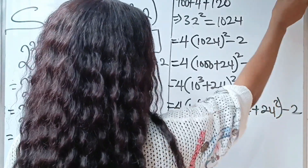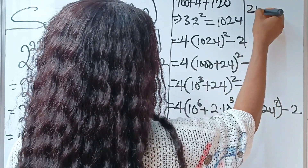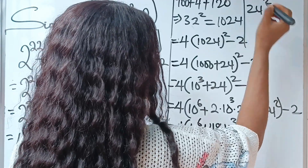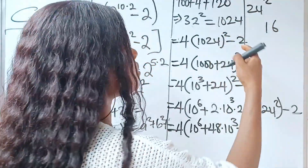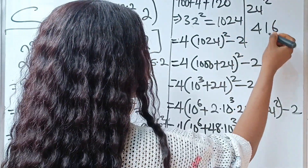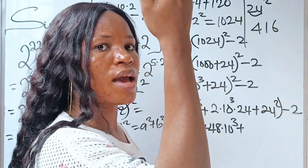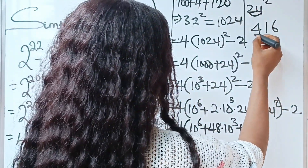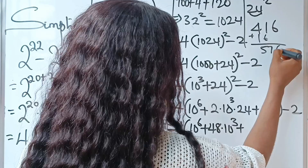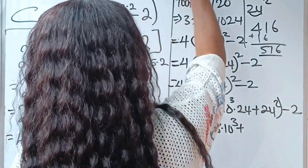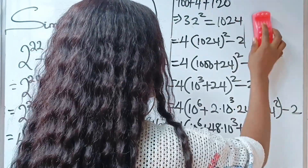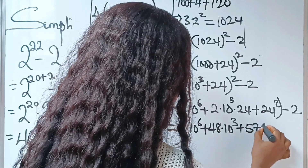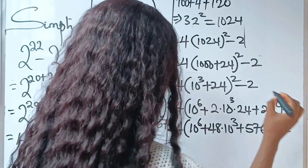Let me compute 24 squared using the trick. 4 squared is 16 — already two digits. 2 squared is 4. Then 2 times 4 is 8, and double of 8 is 16. Adding gives us 576. So 24 squared is 576. We now have: 4 brackets, 10 to the power of 6, plus 48 times 10 to the power of 3, plus 576, minus 2.